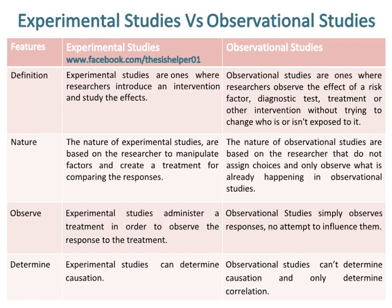The nature of experimental studies is based on the researcher manipulating factors and creating a treatment for comparing the responses, while the nature of observational studies is based on the researcher not assigning choices and only observing what is already happening. Experimental studies administer a treatment in order to observe the response, while observational studies simply observe responses with no attempt to influence them.